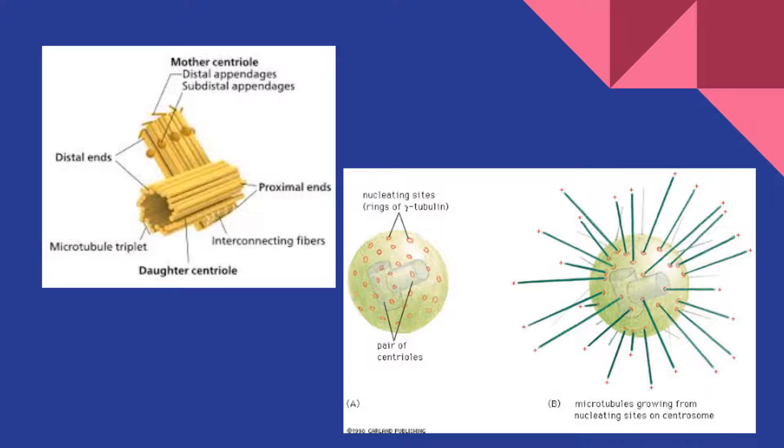Typically, in an animal cell, the organizing center is the centrosome, which is made up of two centrioles.